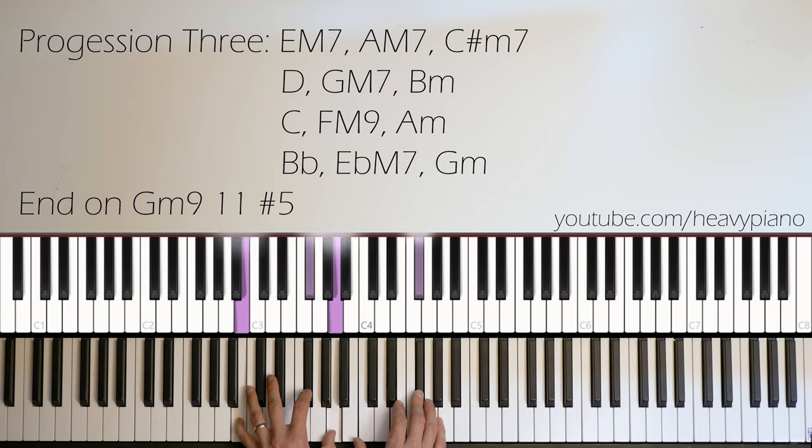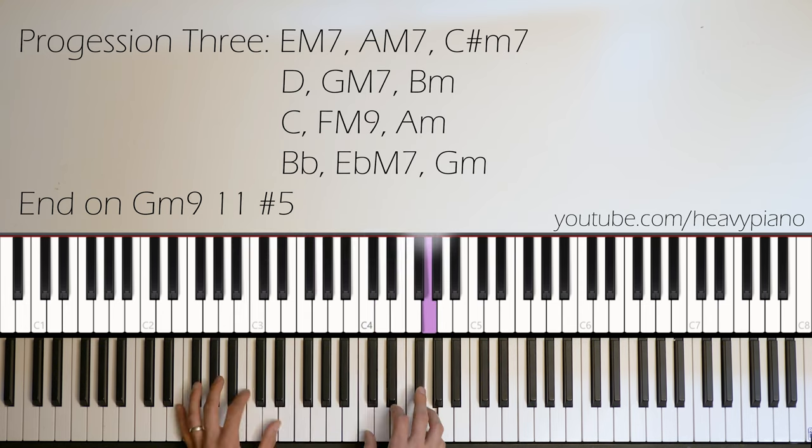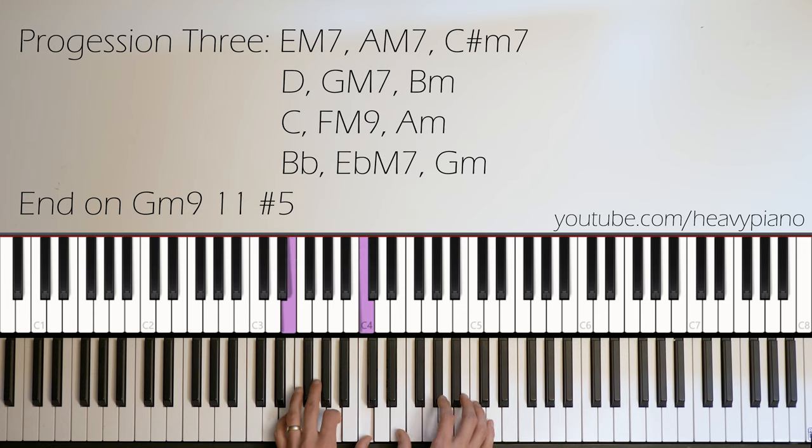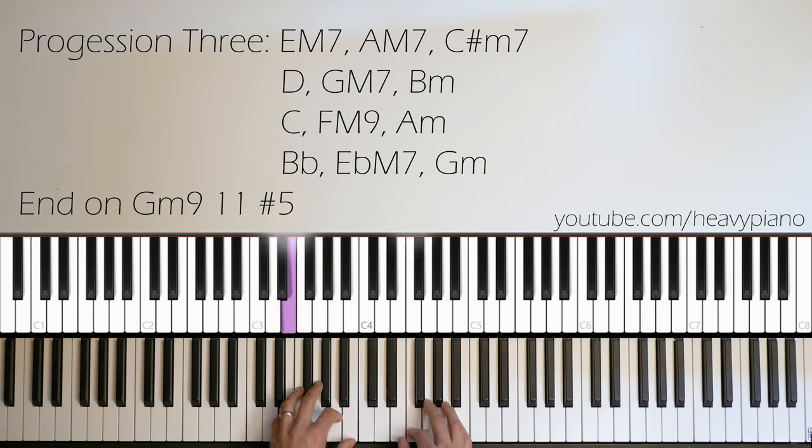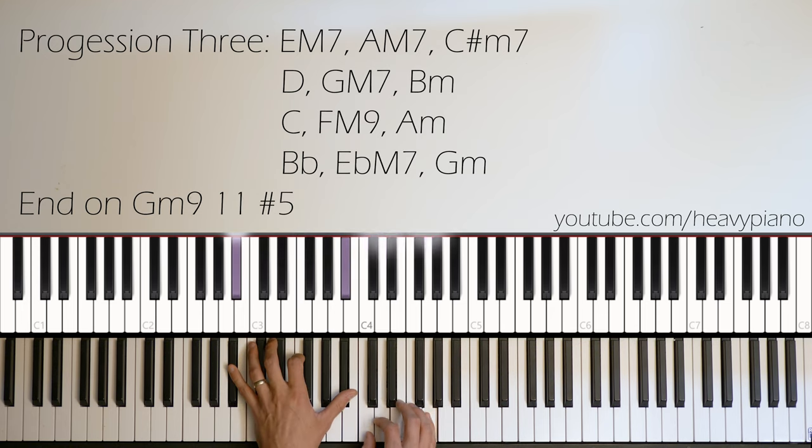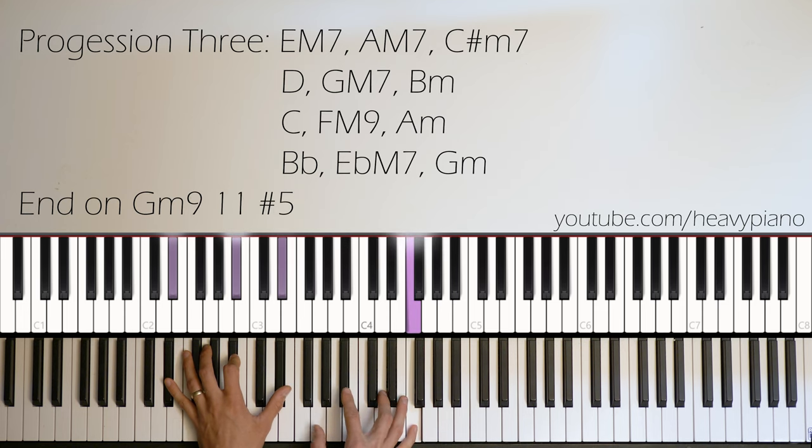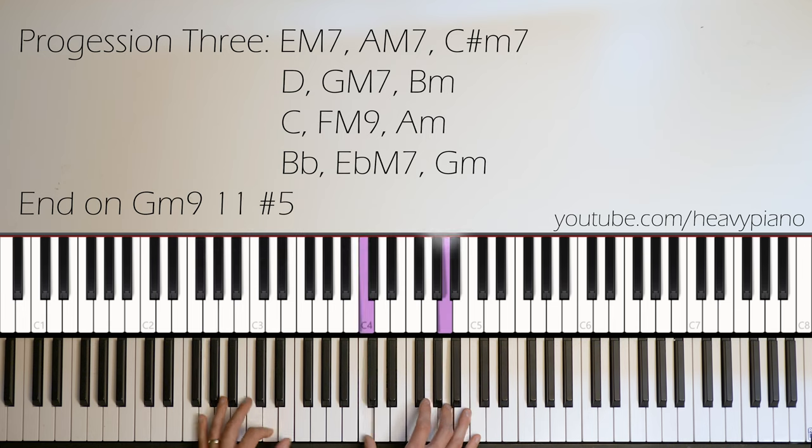I did both these voicings, the B minor, B minor 7, and the B minor 6. Going into the C. It's like a C with a sharp 4, sharp 11. F major 7. Or F major 9. A minor. B flat major. E flat major 7. Or 9. And then it ends on this G minor. G minor.